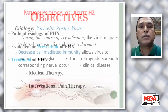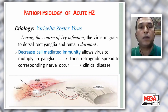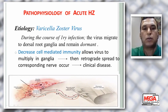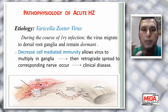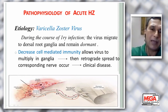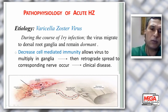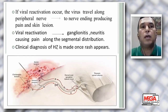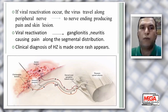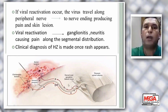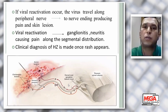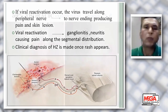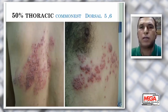Varicella zoster virus is the causative agent for chickenpox in children and herpes zoster in adults. During the primary infection, the virus travels through the nerve from the skin to lie dormant in the dorsal ganglia. Then, if cell-mediated immunity is depressed, the virus goes in the other direction to the skin, causing herpes zoster eruption. Viral activation causes ganglionitis and neuritis, causing pain along the segmental distribution of the nerve. Clinical diagnosis of herpes zoster is made once the rash appears. Before the rash, there is a dilemma of differential diagnosis. 50% of herpes zoster cases are thoracic; the most common are dorsal 5 and 6.